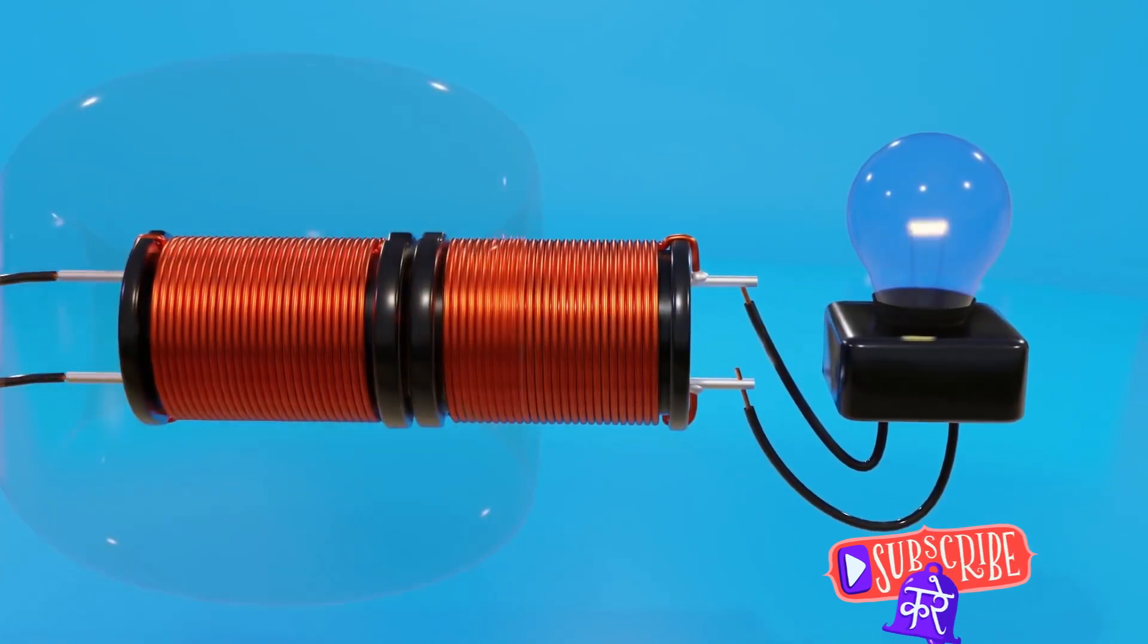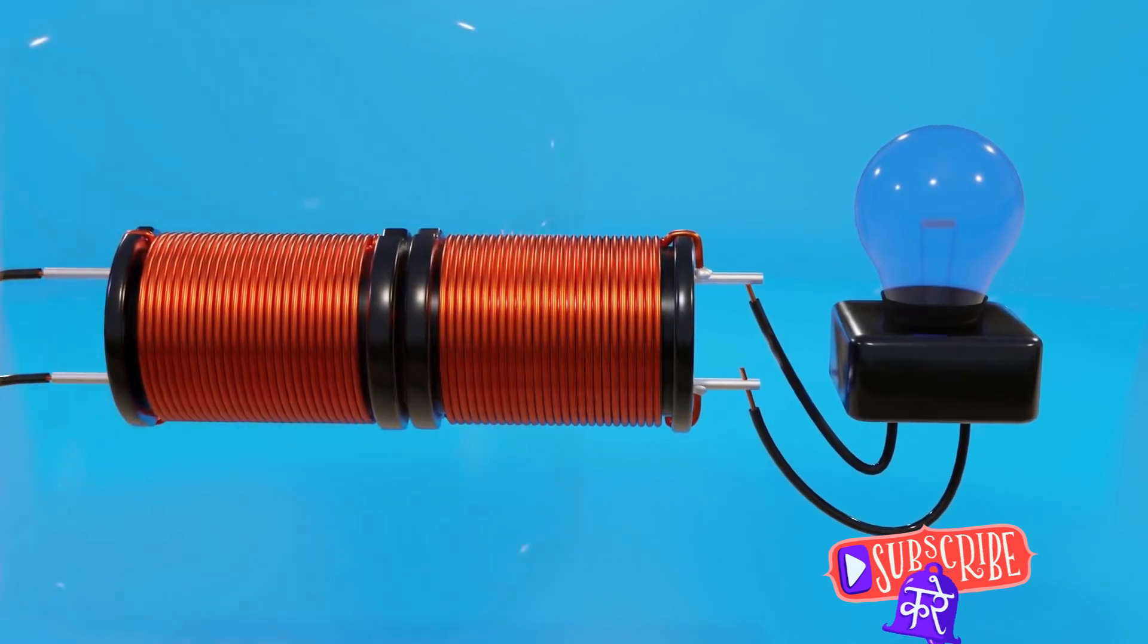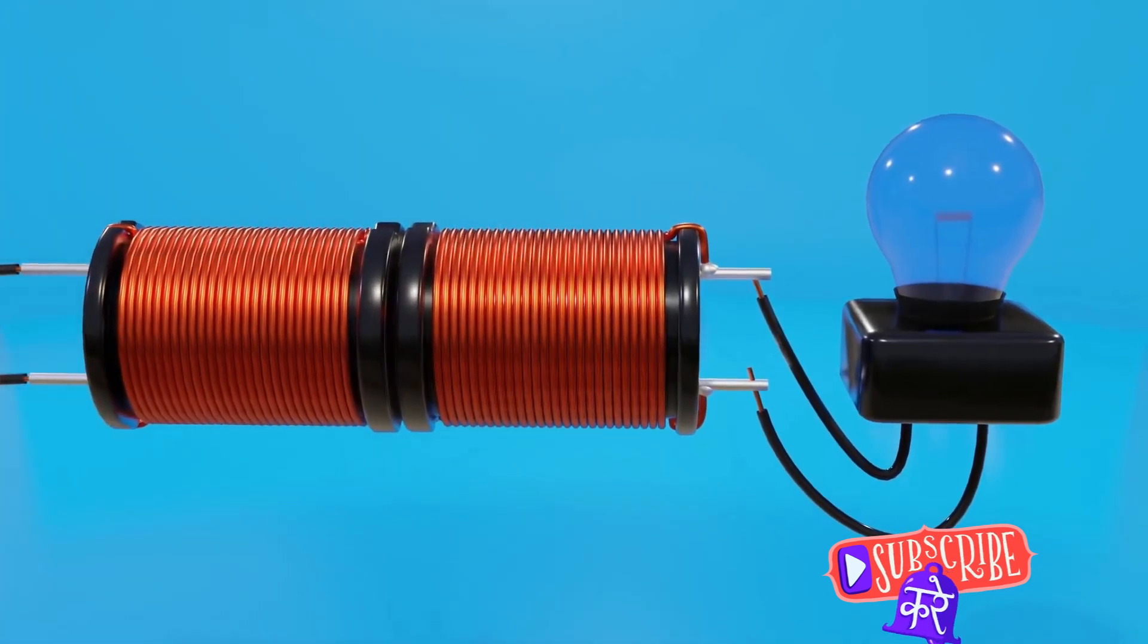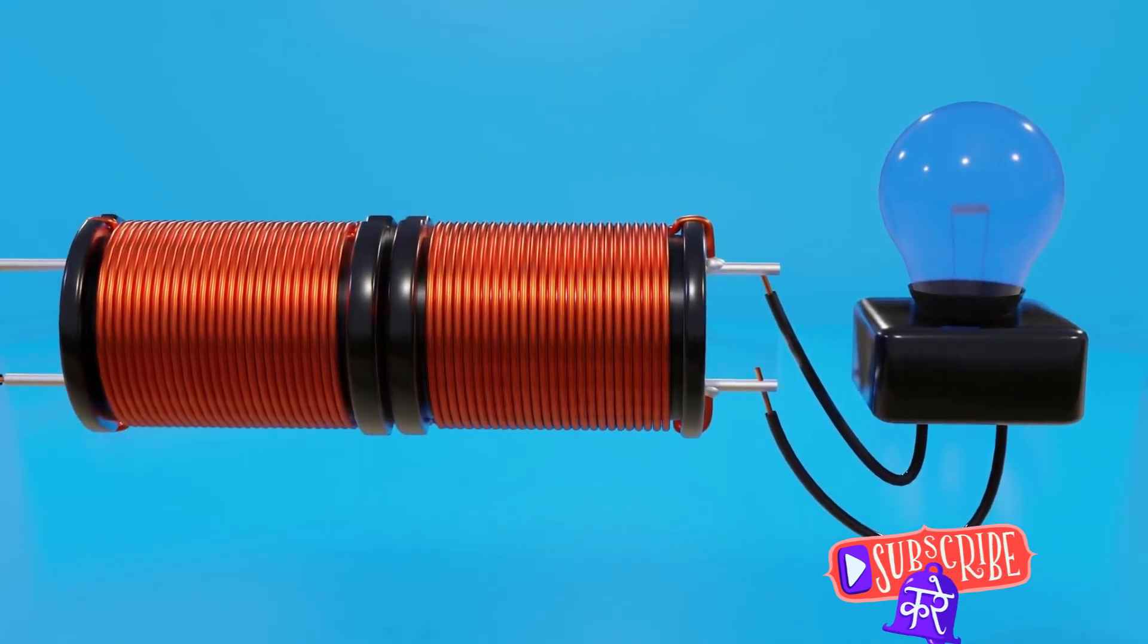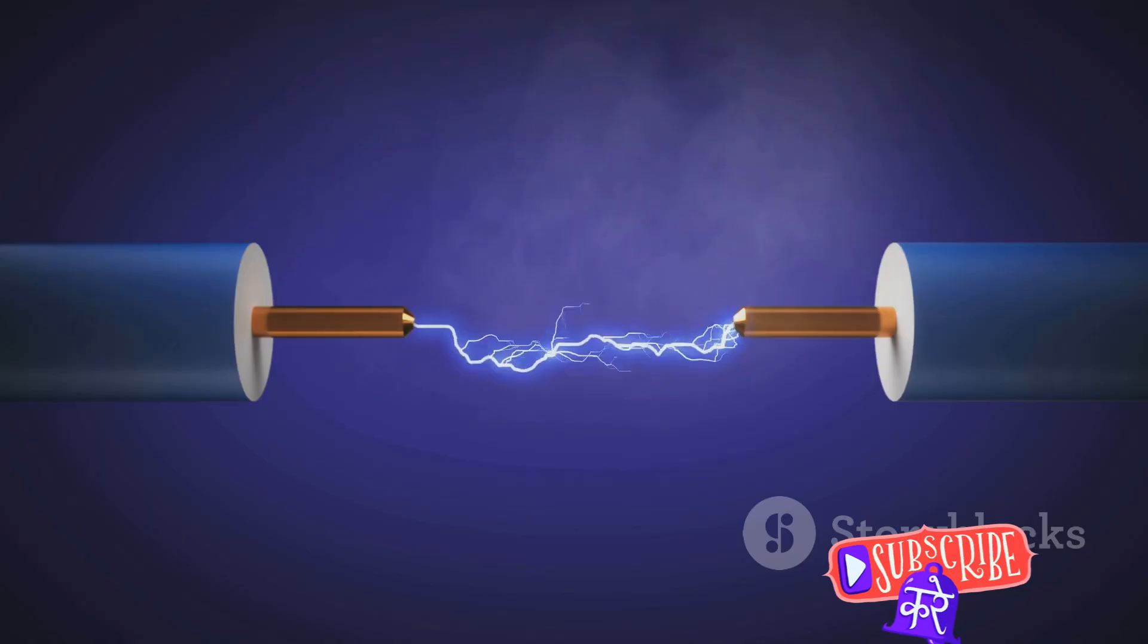Let's start with the power source. This is the heart of the Tesla coil, providing the electrical energy that fuels the entire process. The power source is usually a high voltage transformer or a capacitor bank, which stores and releases the energy needed to create that iconic Tesla coil spark.